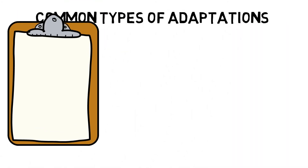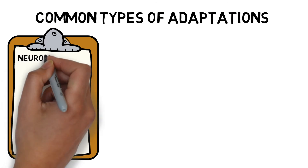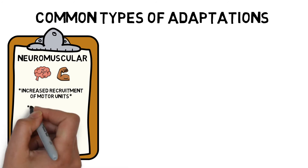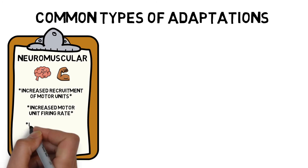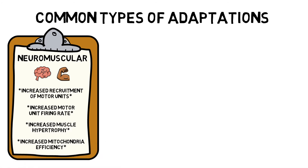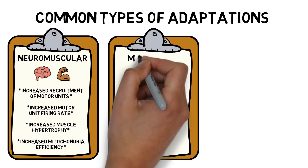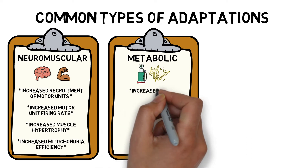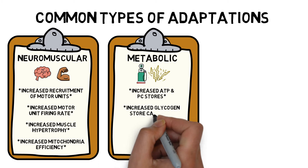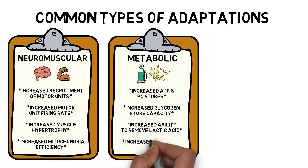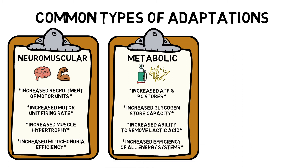There are various types of adaptations that can occur through training. Common neuromuscular adaptations include increased recruitment of motor units, increased motor unit firing rate, increased muscle hypertrophy, and increased mitochondria efficiency. Common metabolic adaptations include increased ATP and PC stores, increased glycogen store capacity, increased ability to remove lactic acid, and increased efficiency of all energy systems.